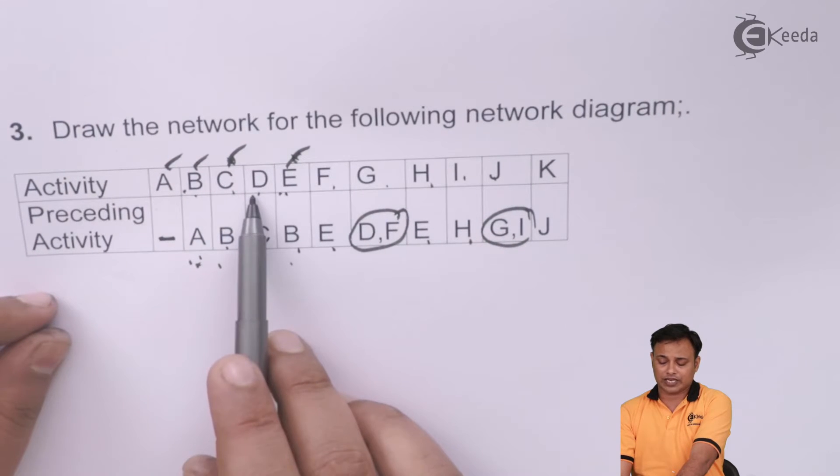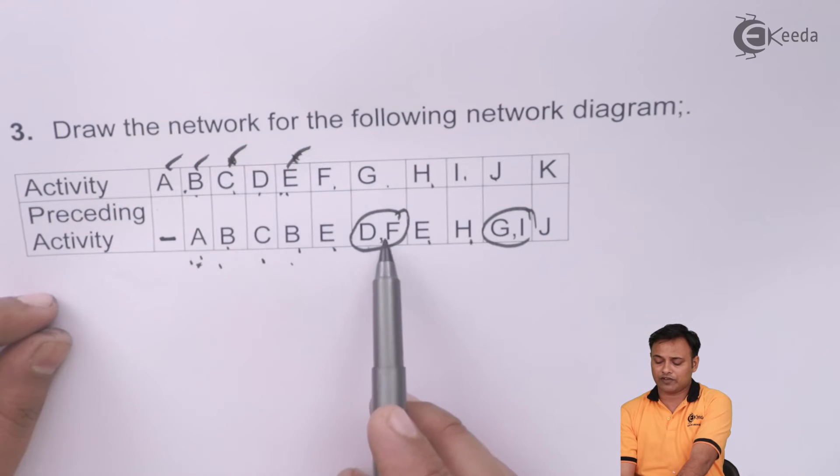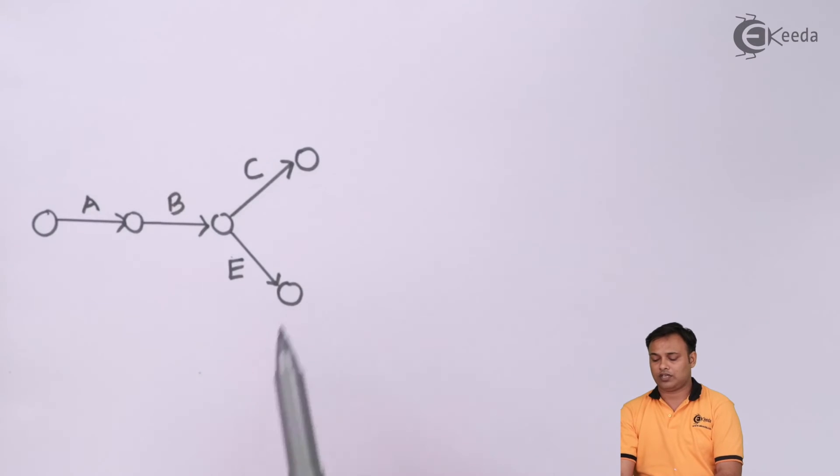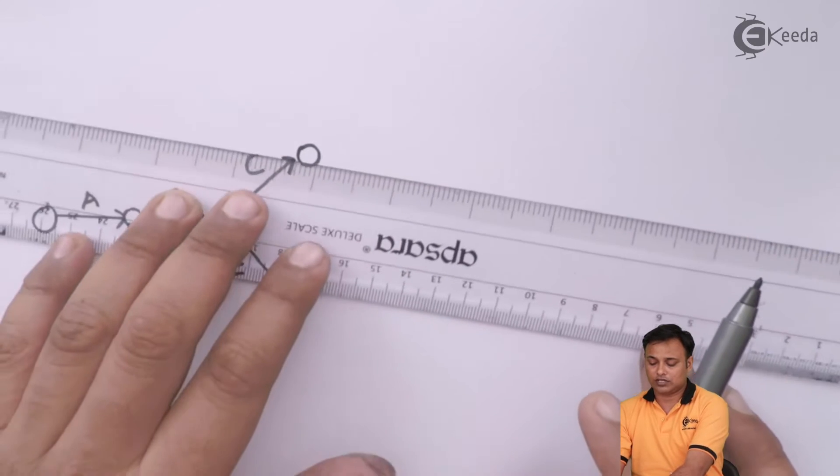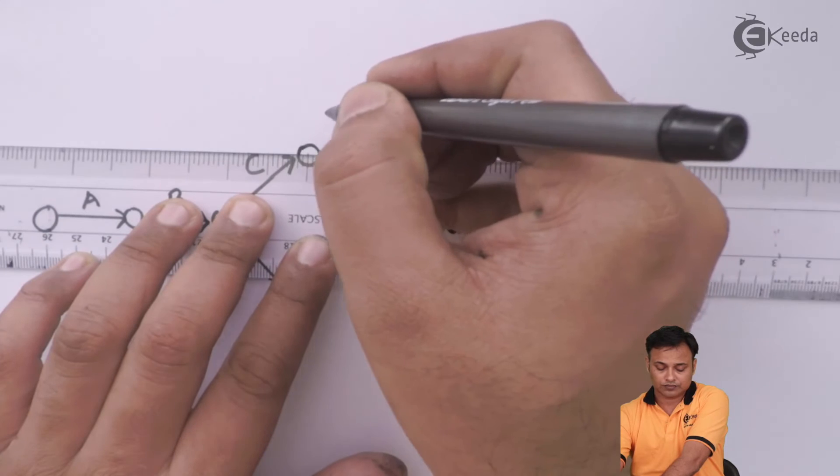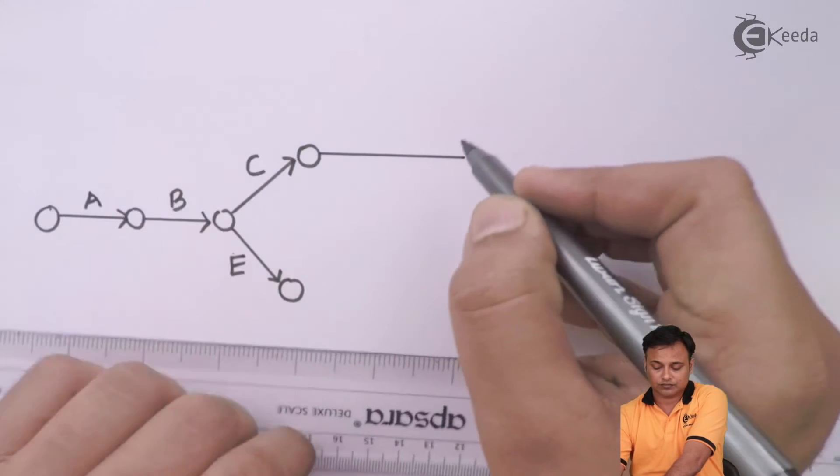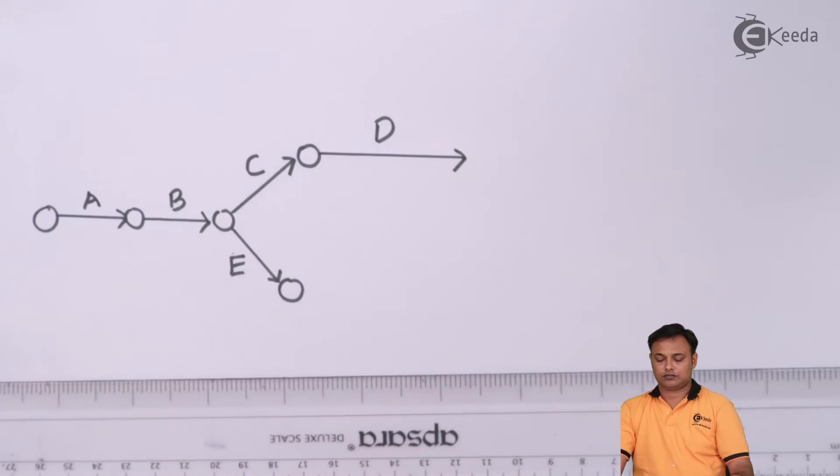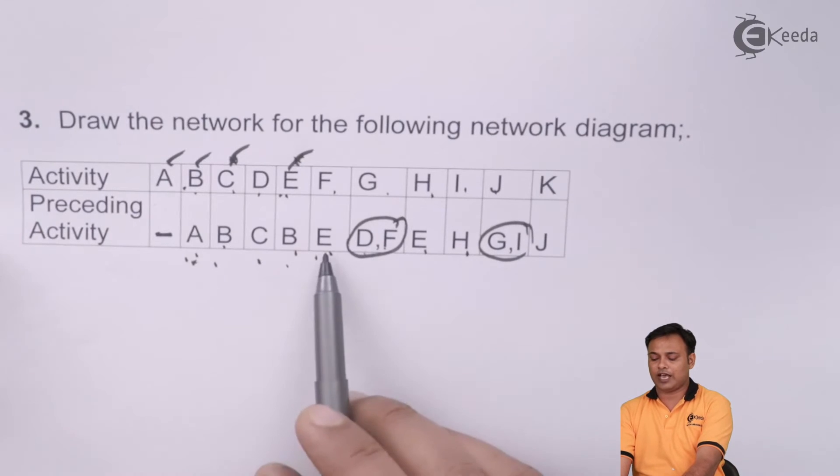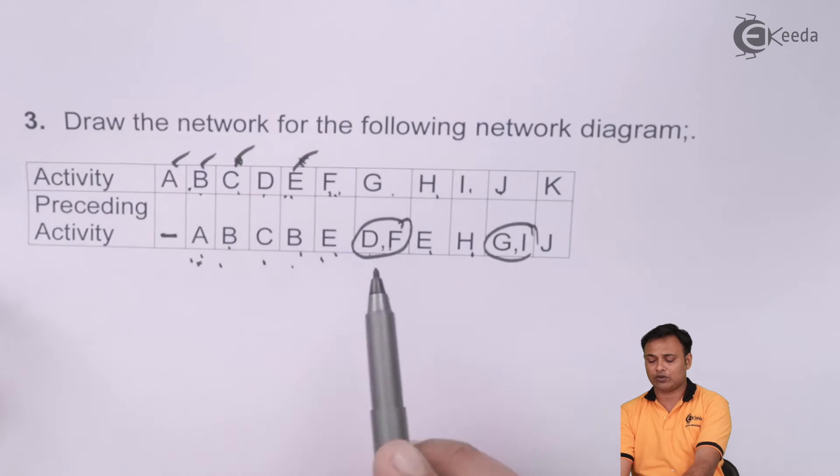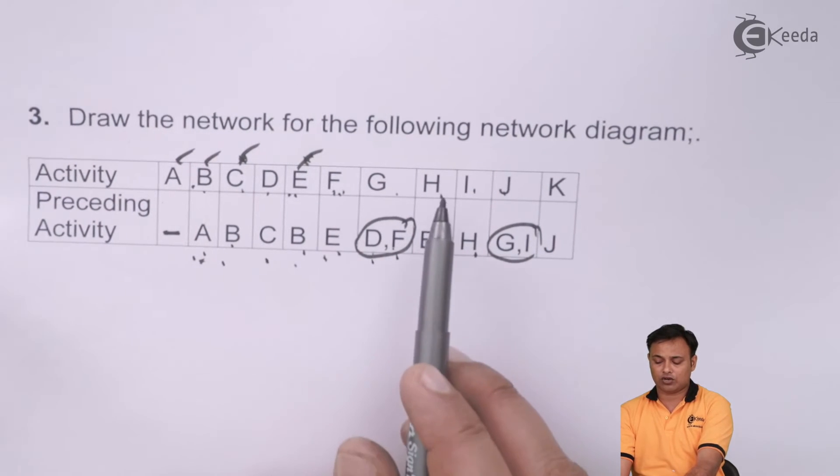After C we have activity D. I need to combine, and after E we have F and H. After C comes D, and after E comes F. After E we have F and H.